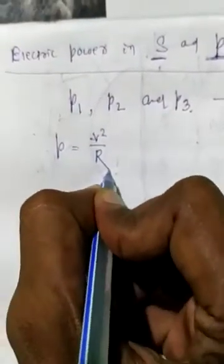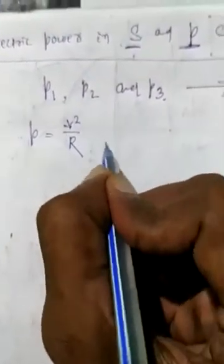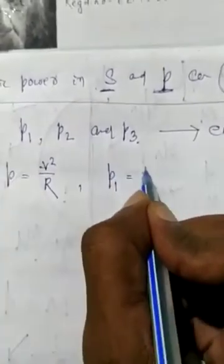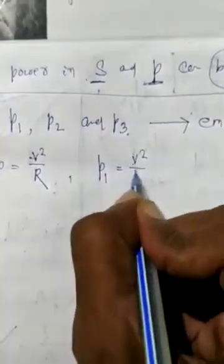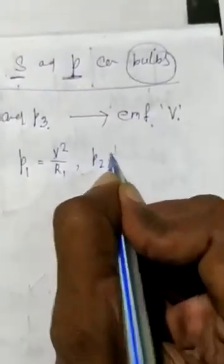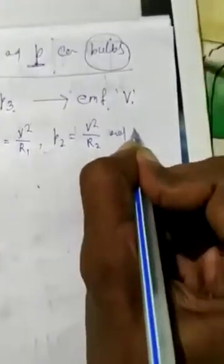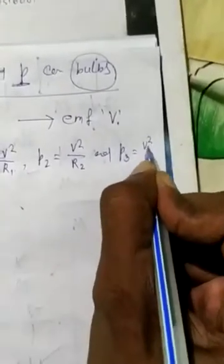The potential difference is V. As we know, electric power P is equal to V square by R. Now the power of the bulbs are given by: P1 is equal to V square by R1, P2 is equal to V square by R2, and P3 is equal to V square by R3.